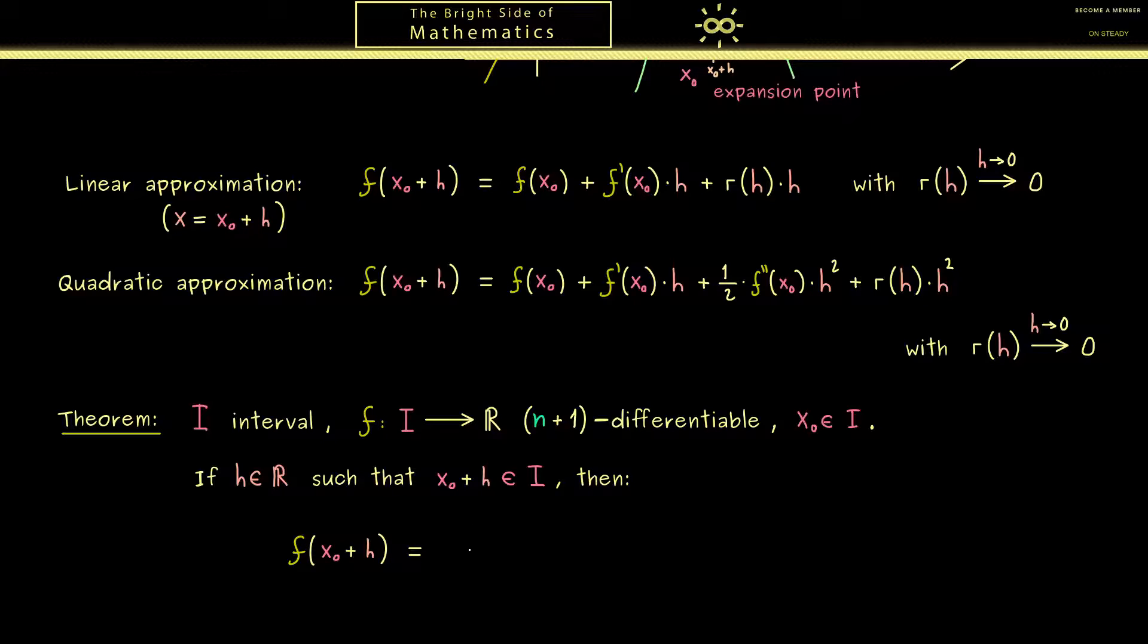Hence in this case f of x0 plus h is given as a whole sum of all the derivatives of the function f at the point x0. So please keep in mind this is a real number and we divide it by k factorial. So here you should see we start with k equals 0 which is just the function f at the point x0. And then we go through all the derivatives until we reach the nth one.